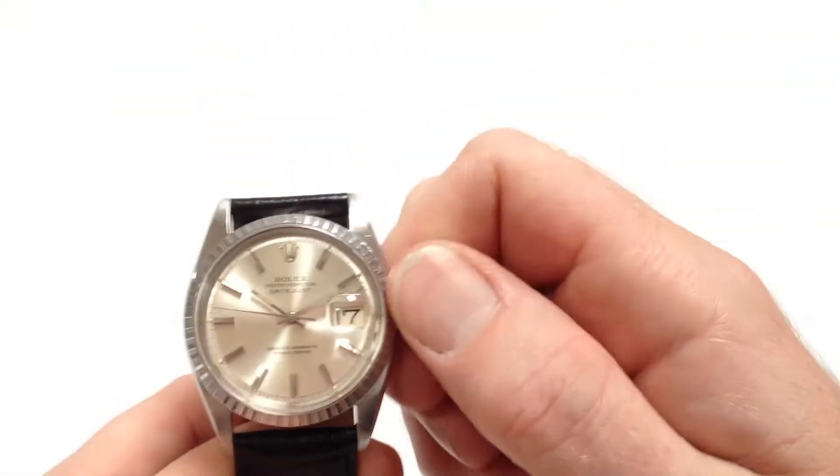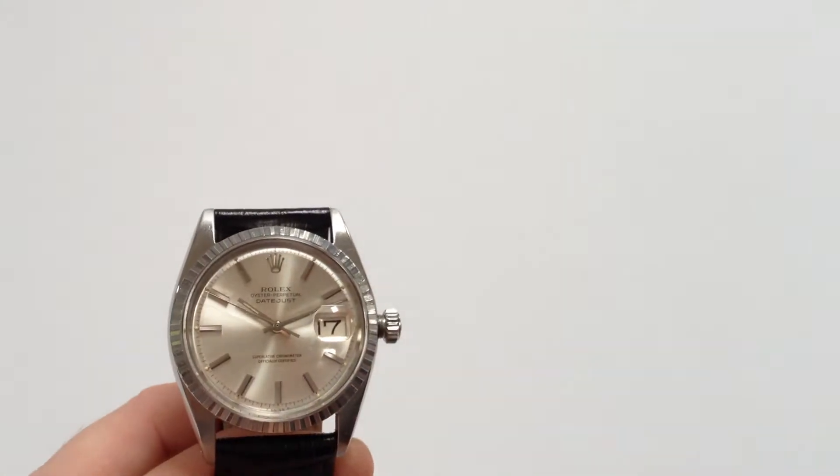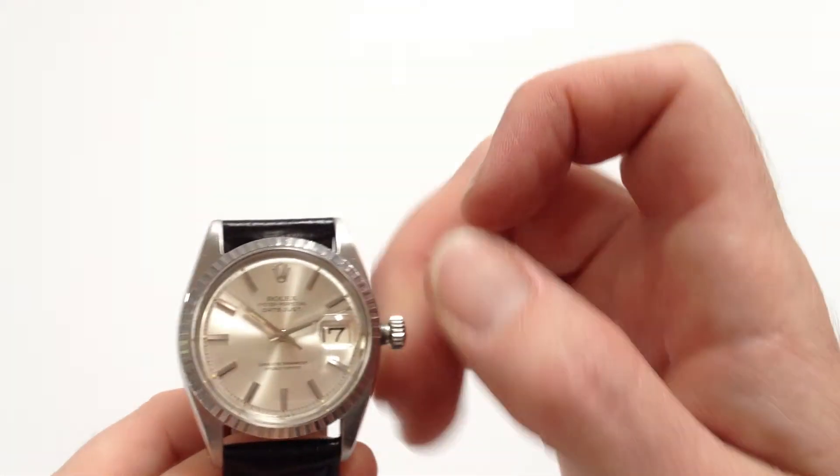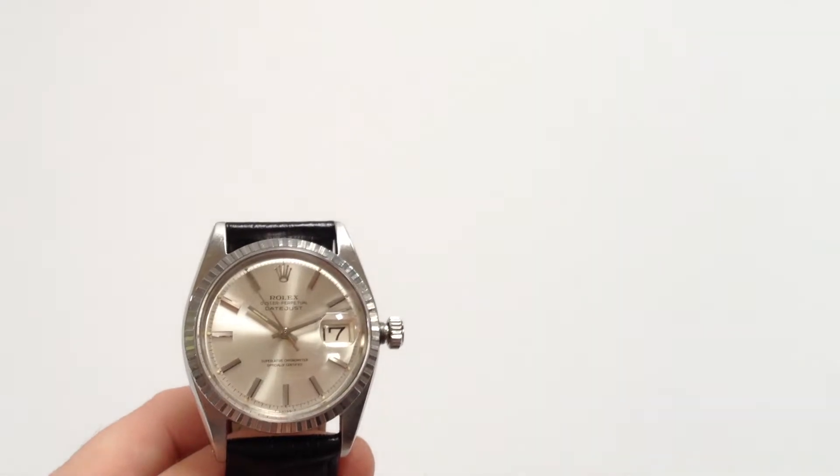First of all, turn the crown towards you, the wearer. It will then spring away from the body of the watch and twist it away from you to wind the watch. A few turns will be enough to get the watch started.